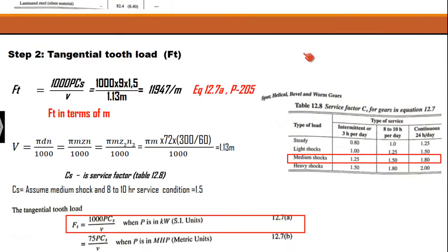Moving to step 2: the calculation of tangential load. For a type 1 bevel gear question, the module is only M — unlike the helical gear, we cannot have two modules here. We are assuming medium shock condition, giving Cs = 1.5 for 8 to 10 hours per day, since the data is not provided. Upon substituting, we get the value of Ft as 11947 divided by M.